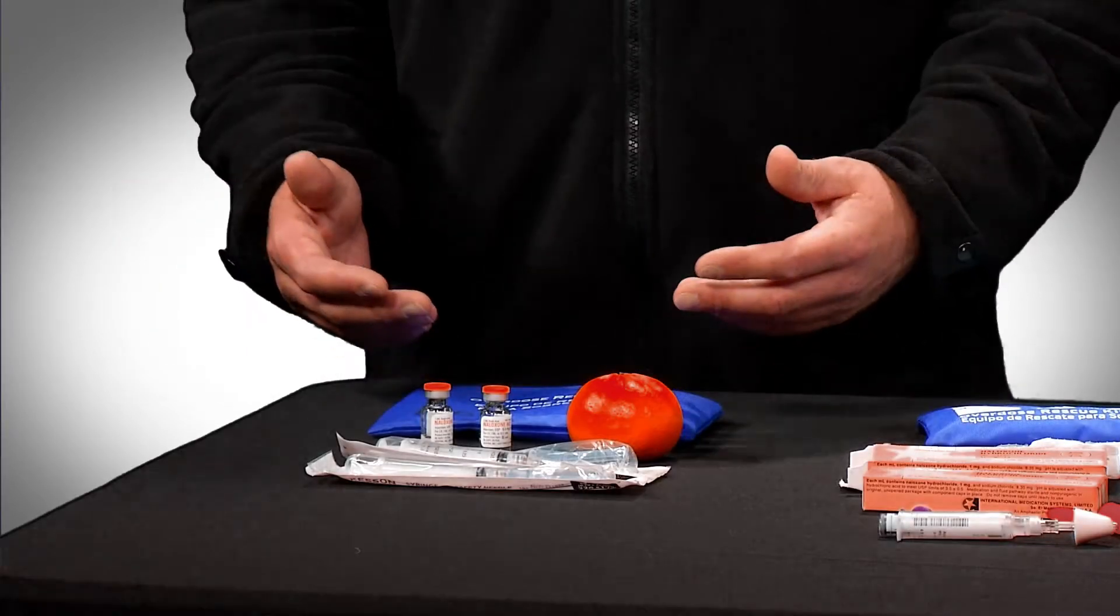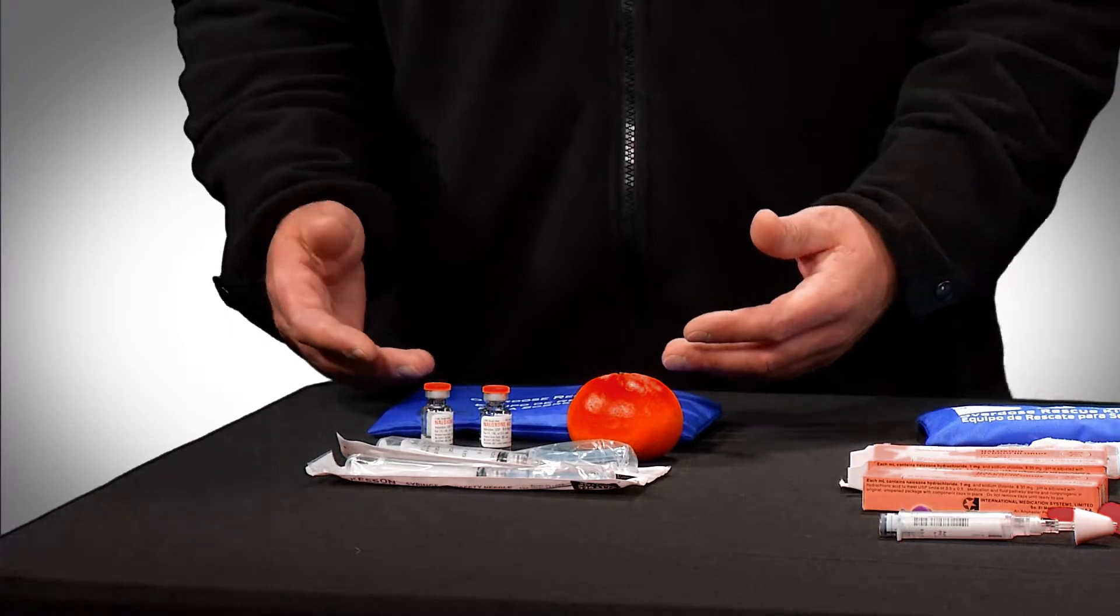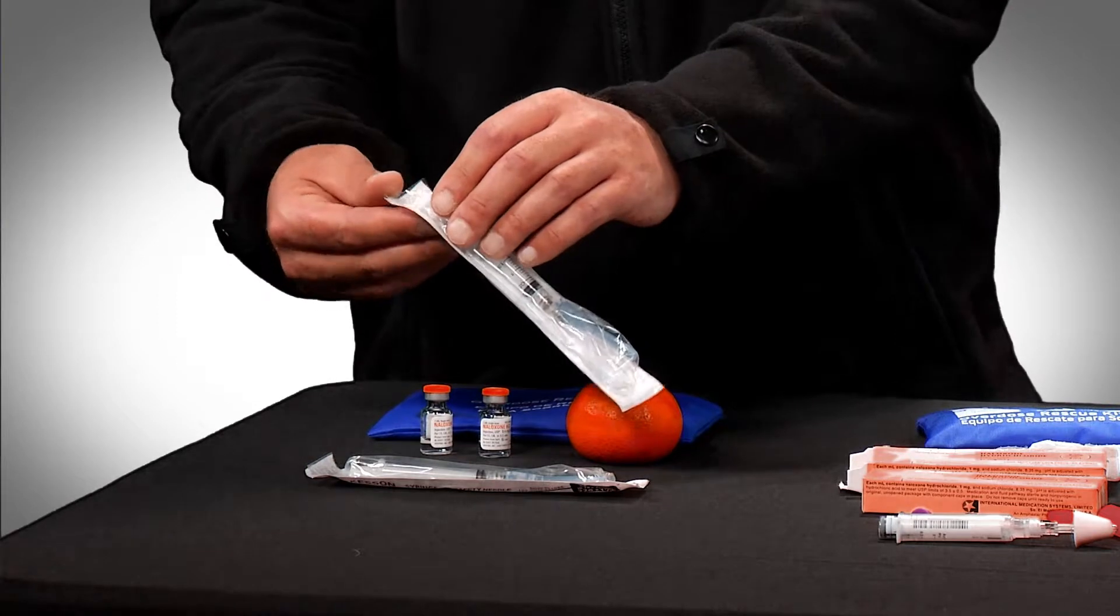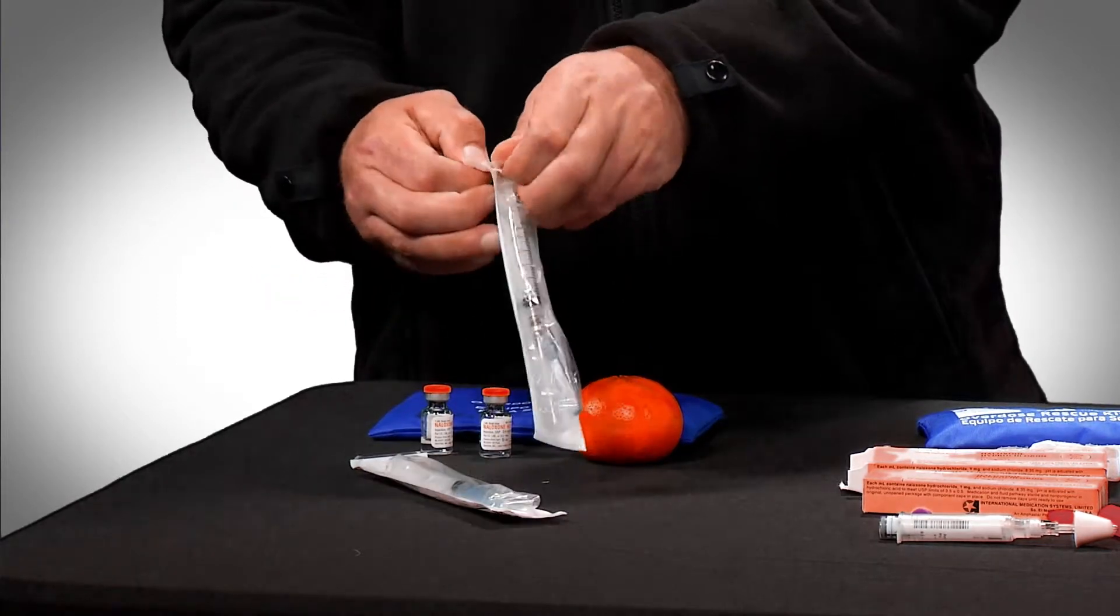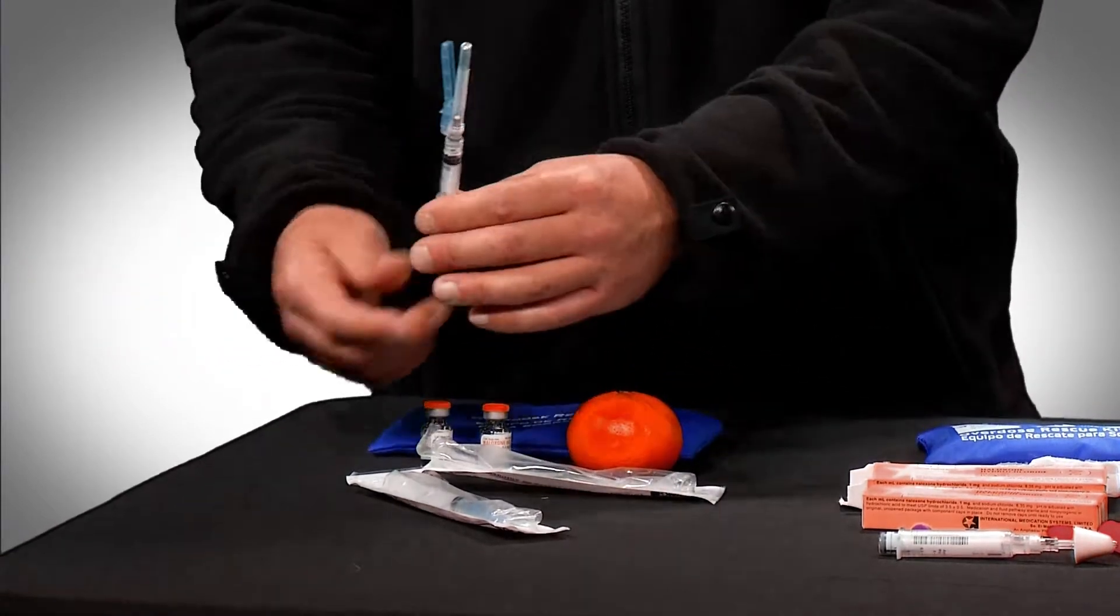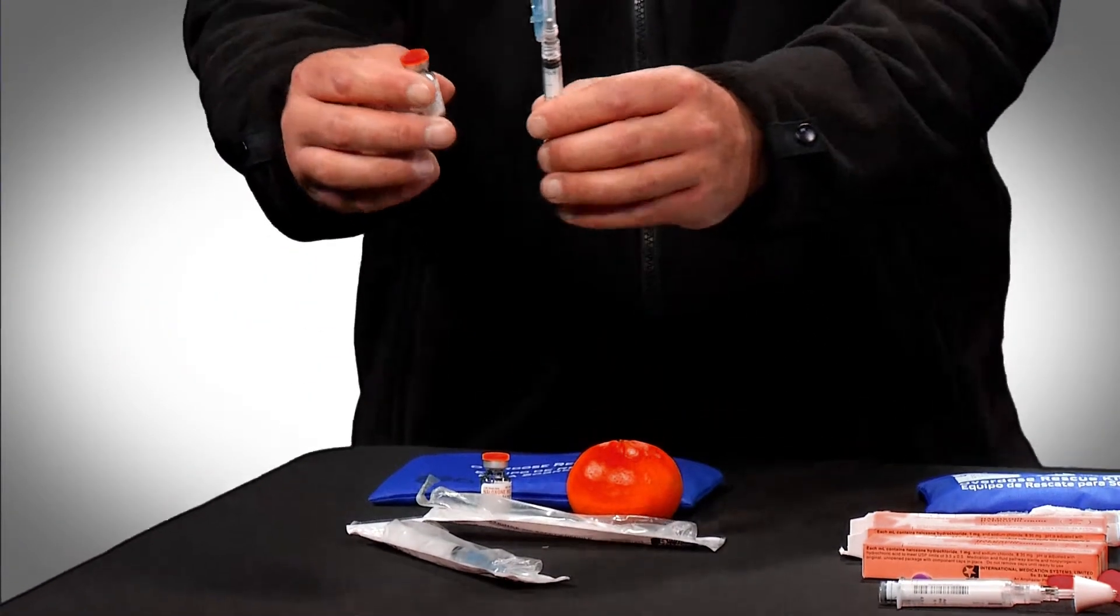You could also get the intramuscular injection form of naloxone from the pharmacy. With these kits, all you do is grab one of the intramuscular injection syringes, peel it out of the package, get one of your naloxone vials, and pop off this orange cap.